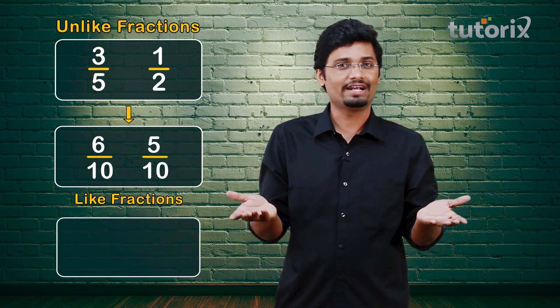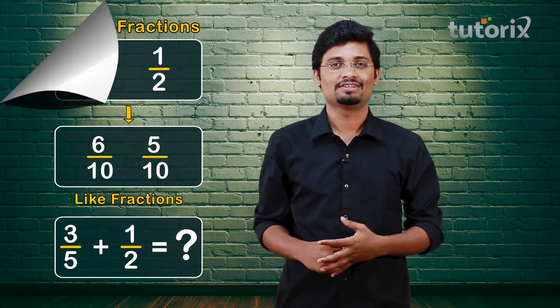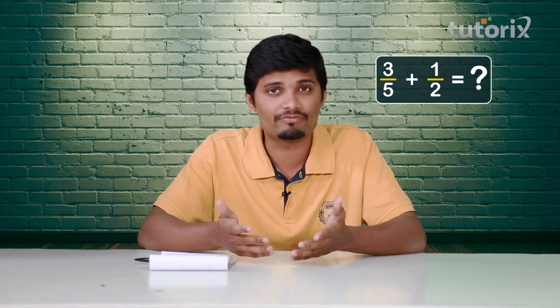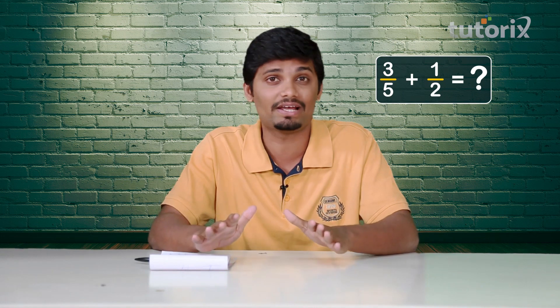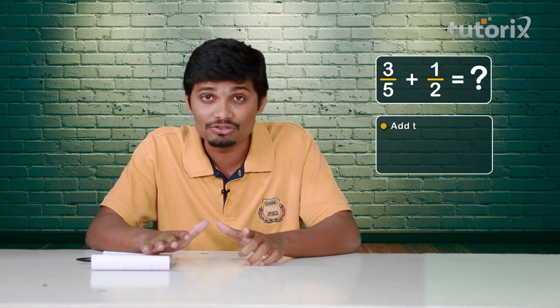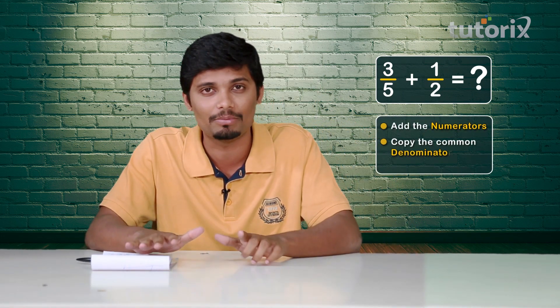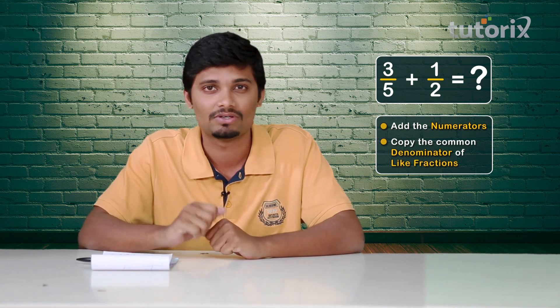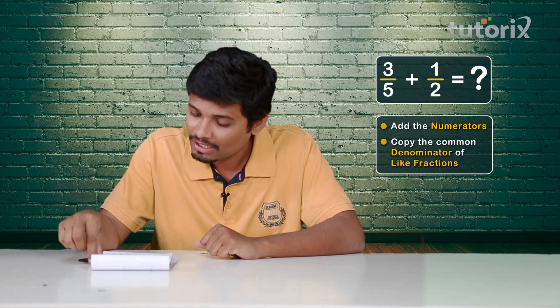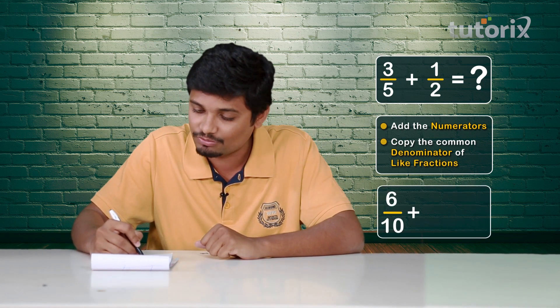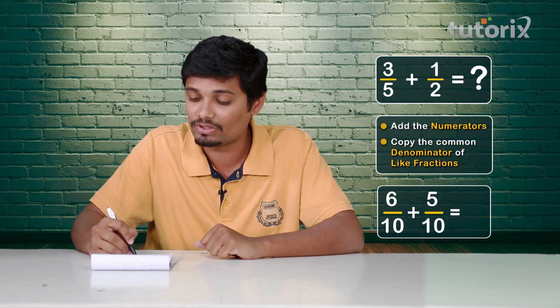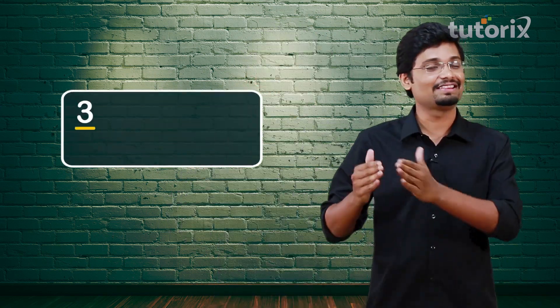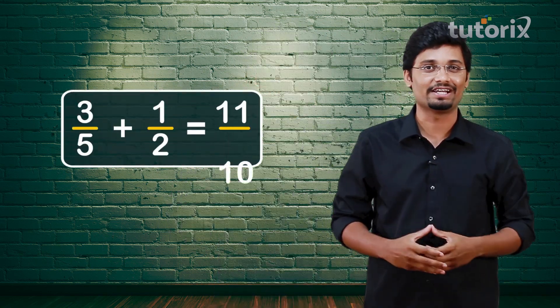Perfect! You successfully converted 3 by 5 and 1 by 2 to like fractions 6 by 10 and 5 by 10. Now, can you add 3 by 5 and 1 by 2? After converting them to like fractions, the remaining process is the same as for like fractions. I should add the numerators and copy the common denominator. So 6 by 10 plus 5 by 10 equals 11 by 10. Amazing! You are doing great! So the result of adding 3 by 5 and 1 by 2 is 11 by 10.